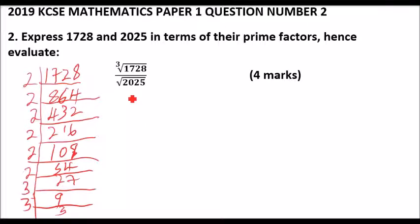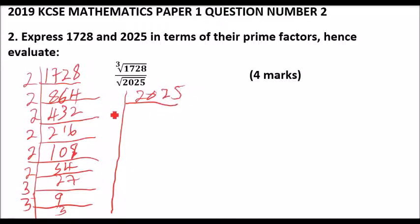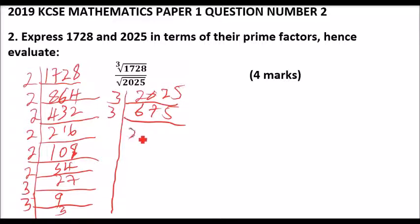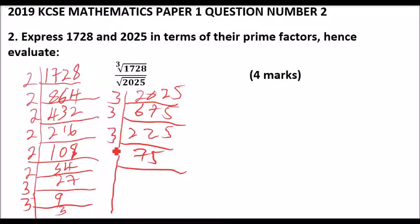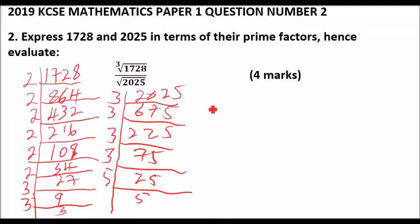Next we find the prime factors of 2025. We divide by 3 to get 675, divide by 3 again to get 225, divide by 3 to get 75, divide by 3 to get 25, then divide by 5 to get 5. These are the prime factors of 2025.